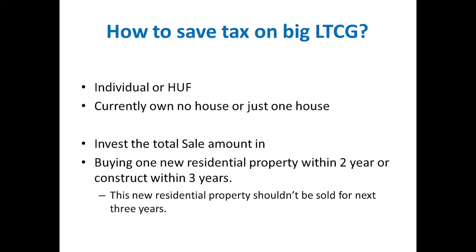Note that it is not just the profit amount — it is the entire sale amount. For example, if you bought shares for 10 lakhs and sold at 60 lakhs, making a profit of 50 lakhs, to claim this exemption you need to buy a new residential property worth 60 lakhs — the complete sale amount — within 2 years if purchasing, or 3 years if constructing.